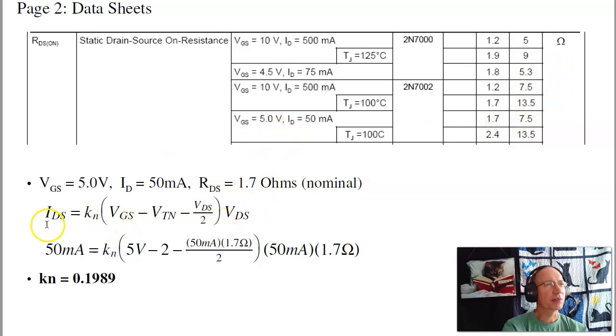I know IDS is 50 milliamps. I know VGS is 5 volts. Else from the data sheets, I can find out that the turn of voltage is 2 volts. VDS is I times R. 50 milliamps at 1.7 ohms gives you VDS. Solving, I get K sub N is 0.1989 amps per volt squared.